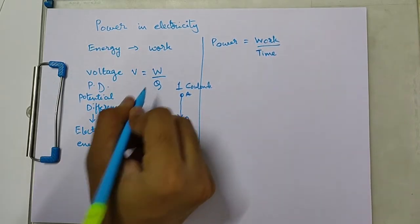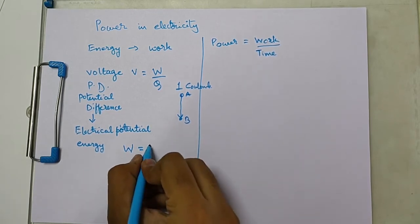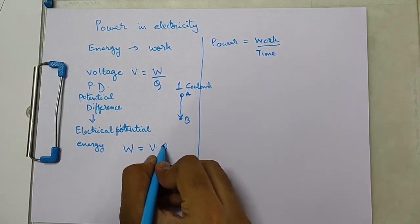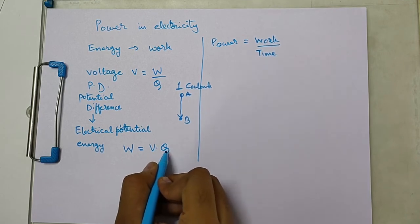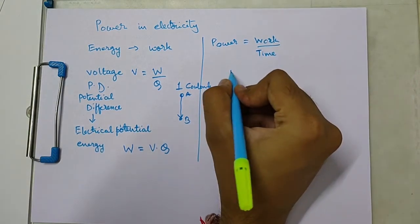Which is known as voltage. So now from this equation, we can say that in electrical terminology, work done is equal to voltage multiplied by unit charge. We can replace this formula in the power equation, so power is